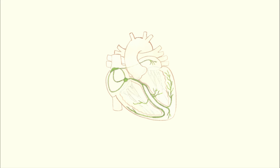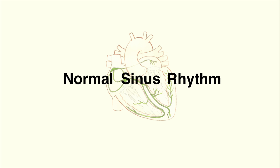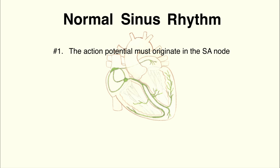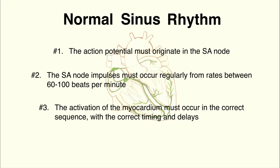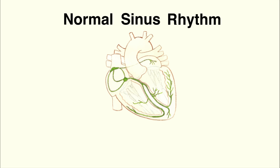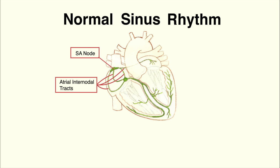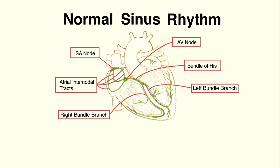In a normal, non-pathologic heart, it beats in what we call normal sinus rhythm. In order to qualify for this rhythm, three criteria must be met: 1. The action potential must originate in the SA node. 2. The SA node impulses must occur regularly at rates between 60 to 100 beats per minute. 3. The activation of the myocardium must occur in the correct sequence with the correct timing and delays. In summary, the heart needs to beat from the SA node, down the atrial internodal tracts to the AV node, then down the bundle of His, down to the right and left bundle branches, and down to the Purkinje fibers.